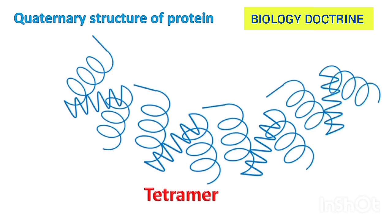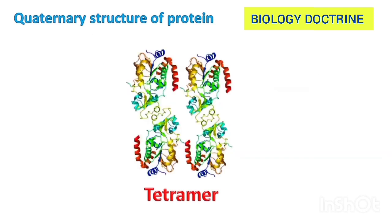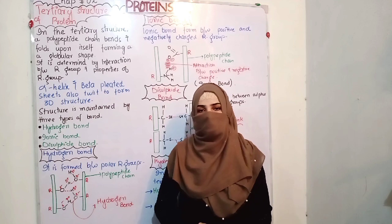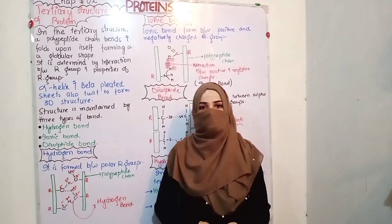The best example of quaternary structure is hemoglobin, which is a tetramer — a highly complex combined structure. Dear students, if you like my video, please subscribe to my channel and share it with others. Thank you so much.